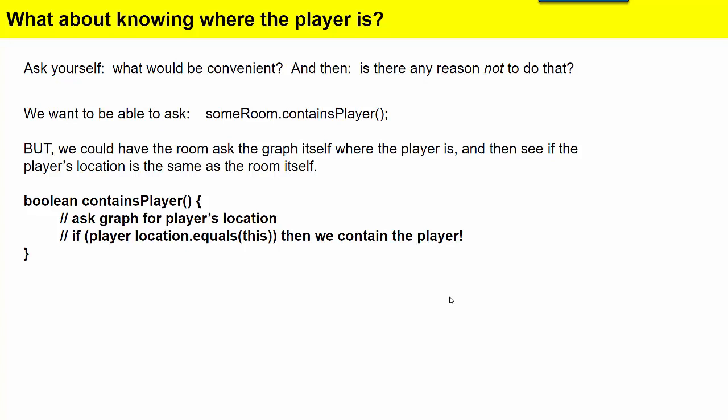So if we did that, because node is an inner class of graph, that means it can access all of graph's fields. So you can ask the graph for the player's location, and then you can check if the player's location is equal to this room. So that would be the method inside each room. And then we can answer yes or no, does it contain the player.